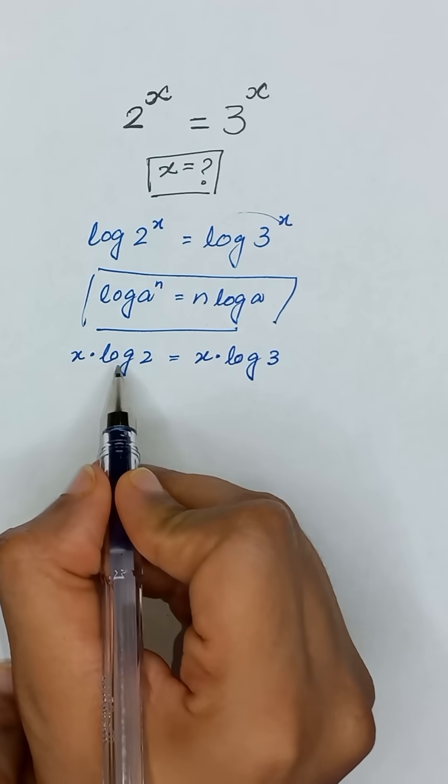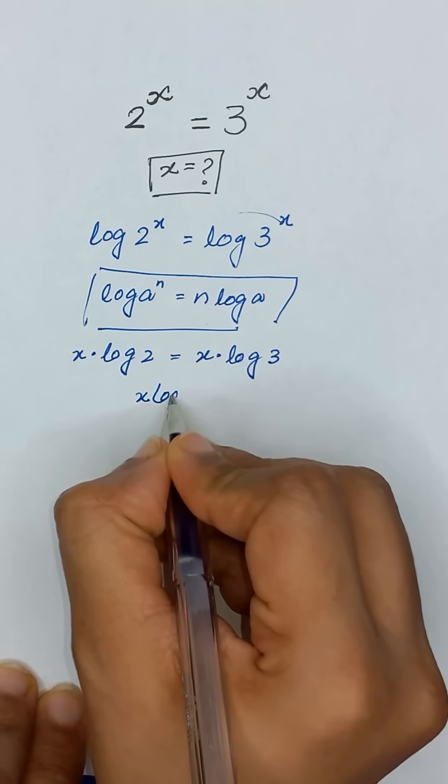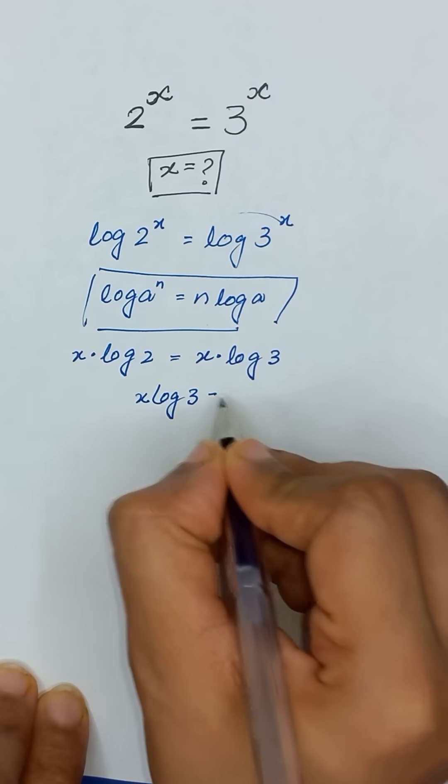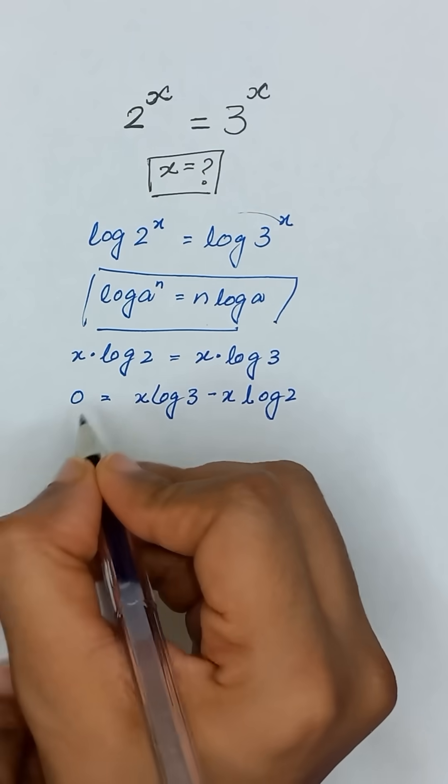Now we will take this x times log of 2 to the right hand side. So it will become x times log of 3 minus x times log of 2 and this side will be equal to 0.